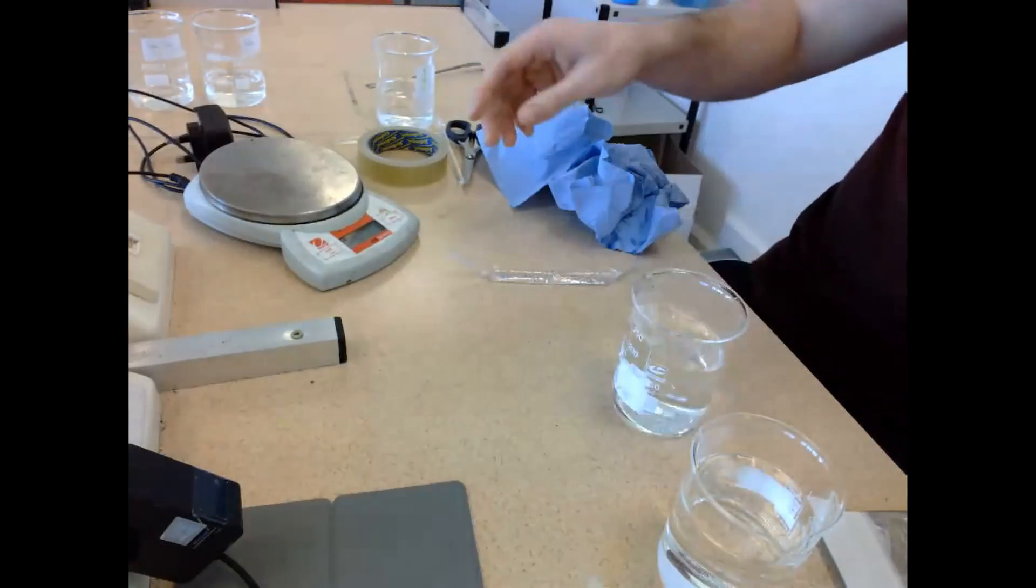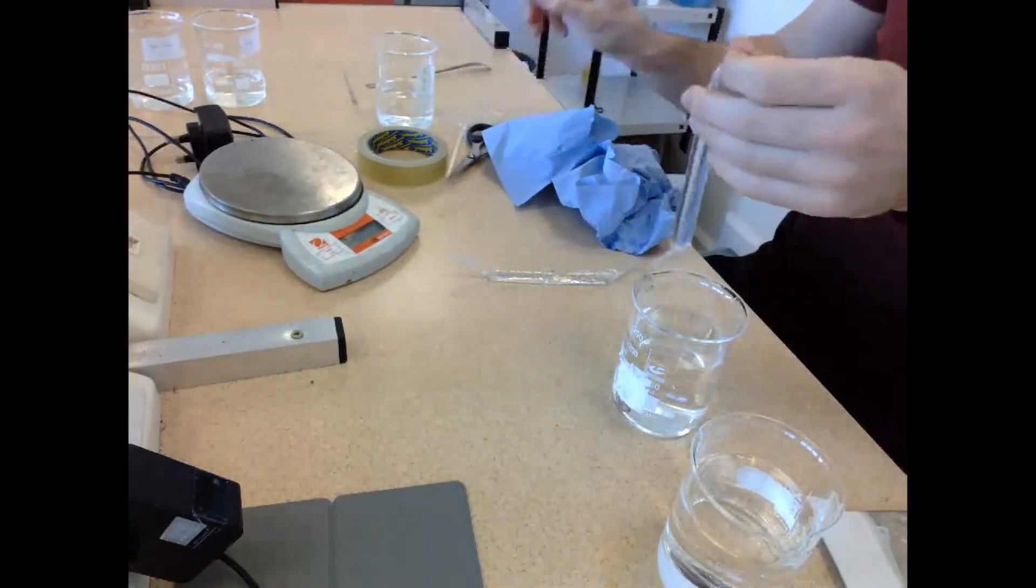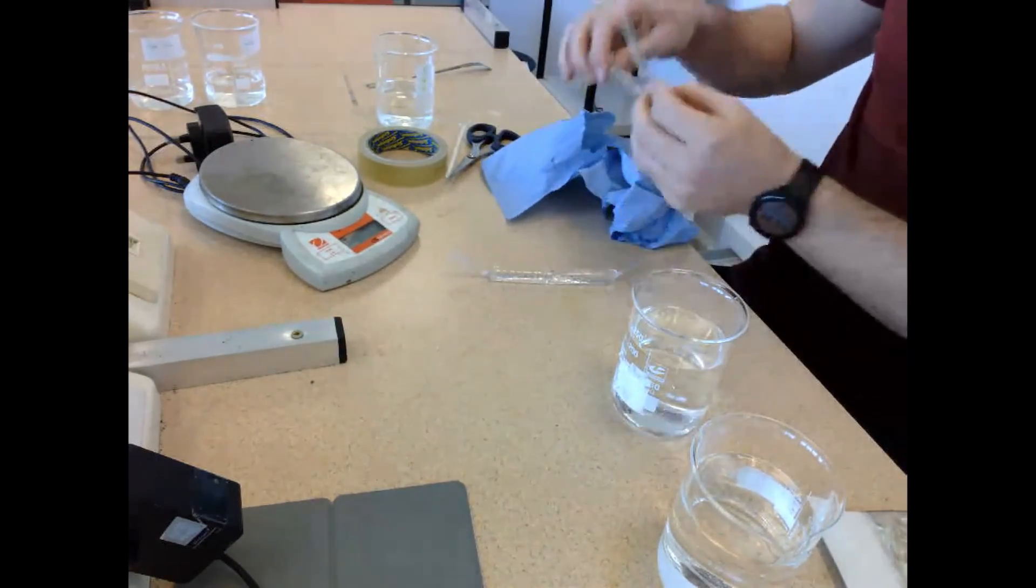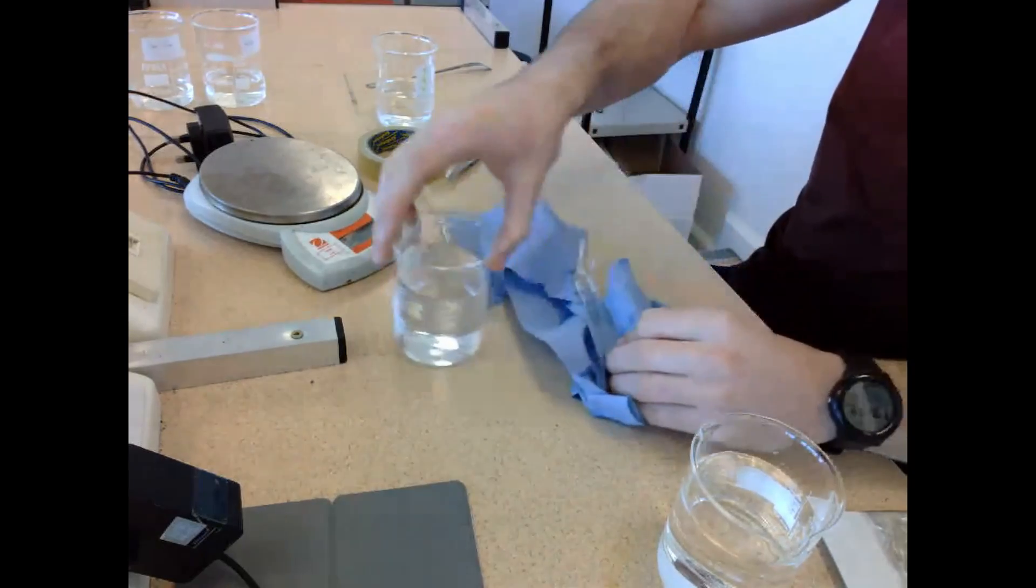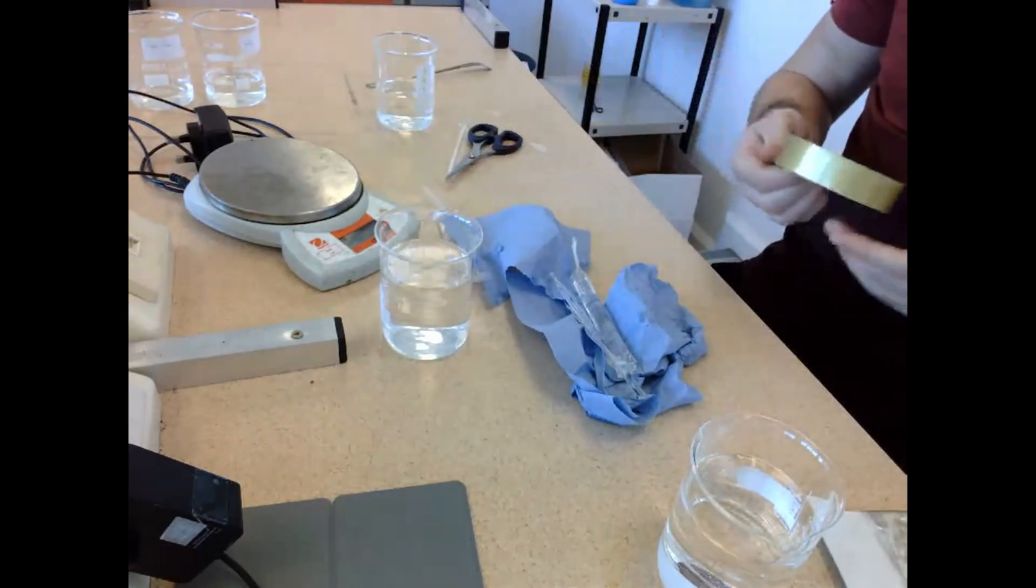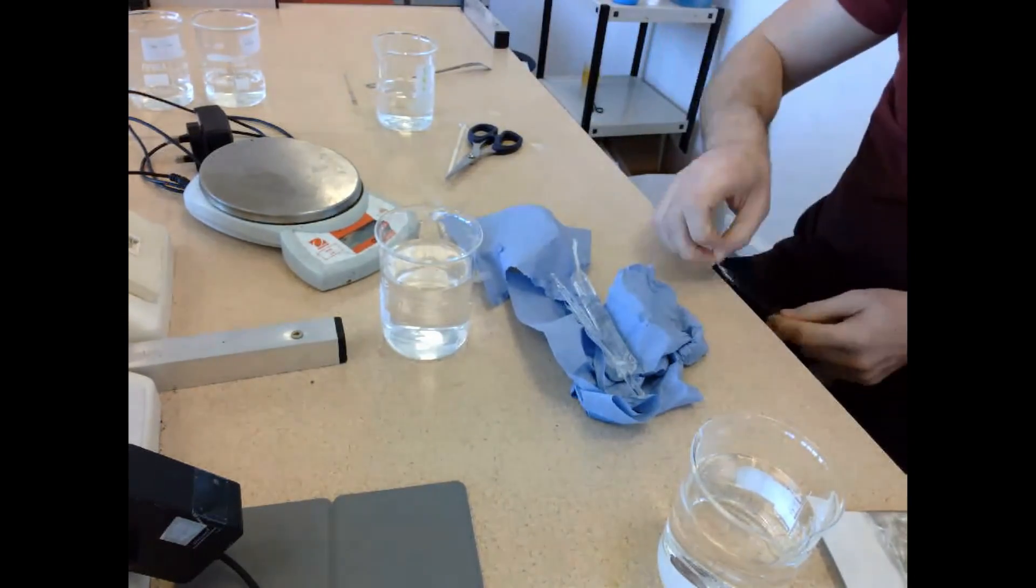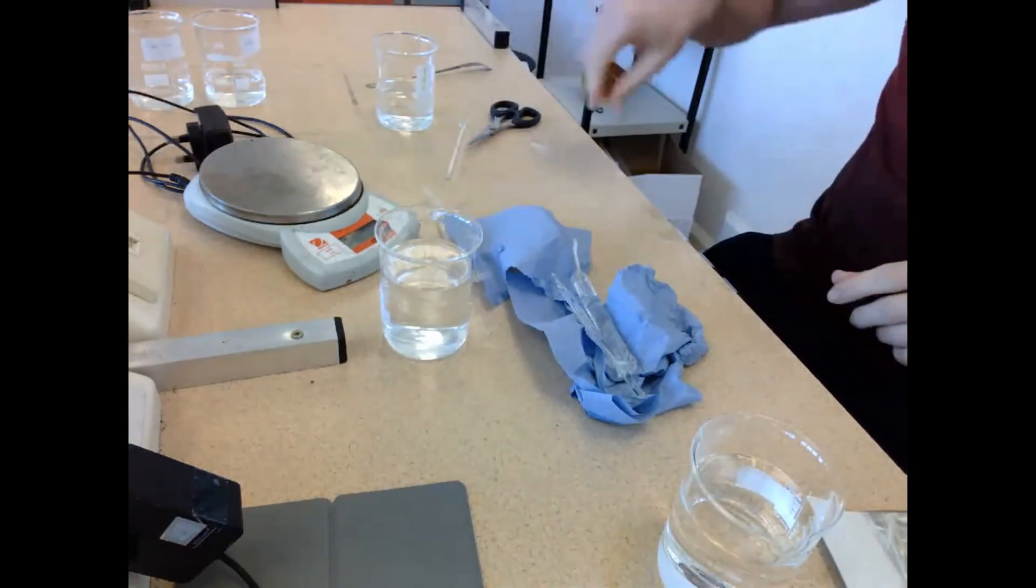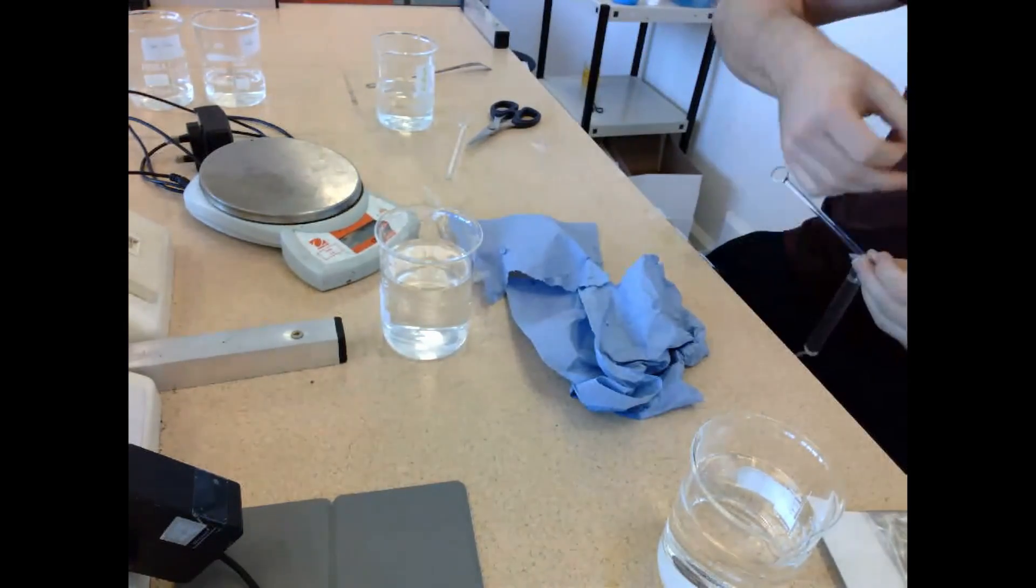Now that they've both been weighed, I can get to the next step, which is attaching them to these glass rods which are going to suspend them above the beakers. To do this, I got some sellotape and just tied both ends of the visking tubing to the glass rods.